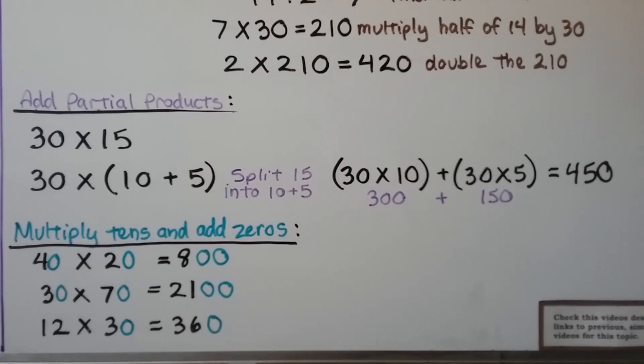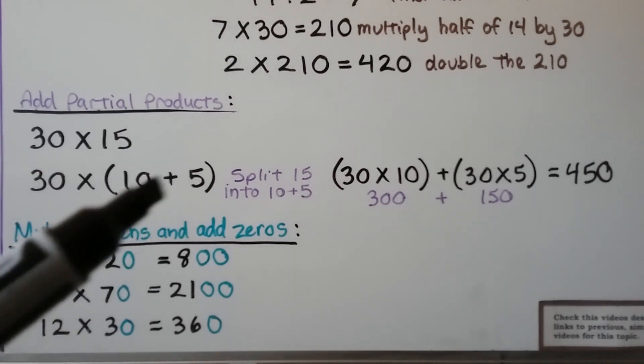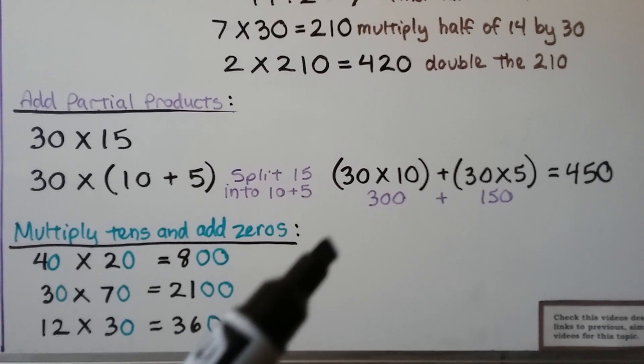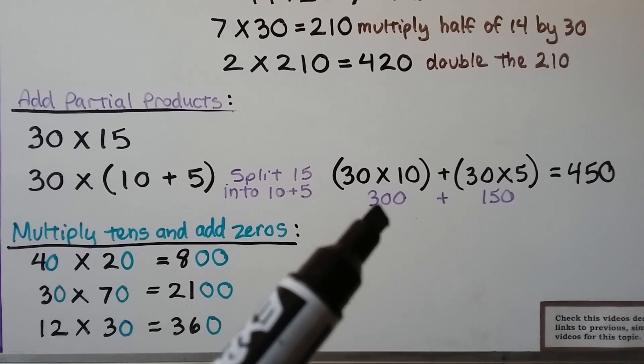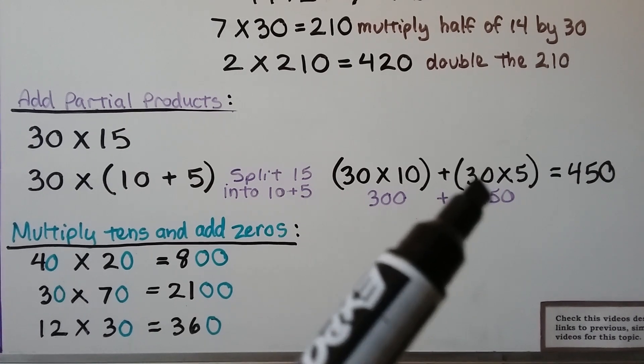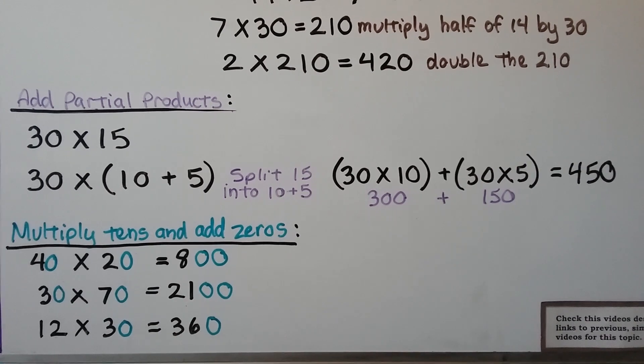For our other mental math strategies, we can add partial products. For 30 times 15, we can do 15 as a 10 plus 5. And if you can multiply in your head 30 times 10, that's 300. And we add 30 times 5, which is 150, to get 450.